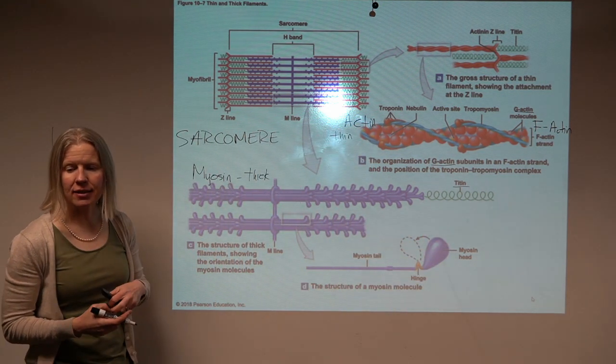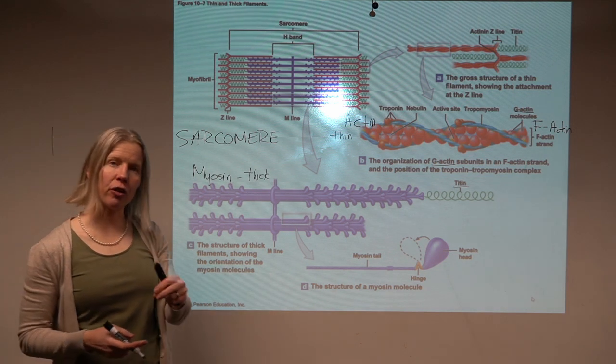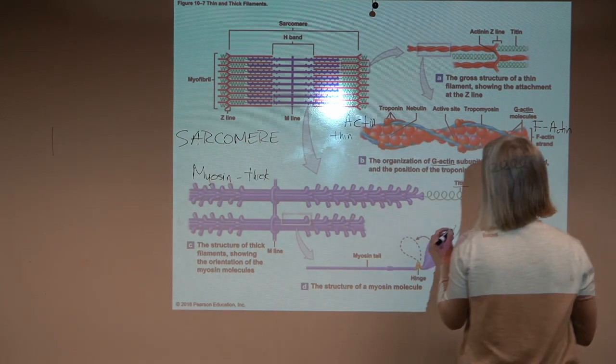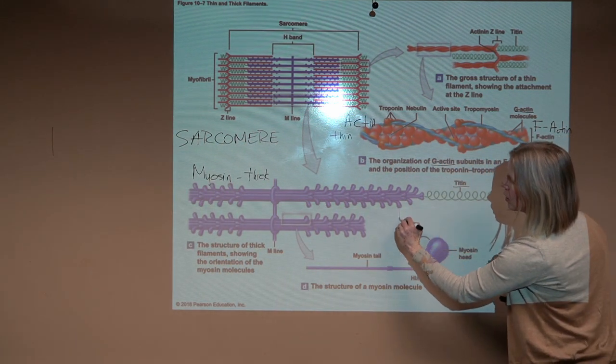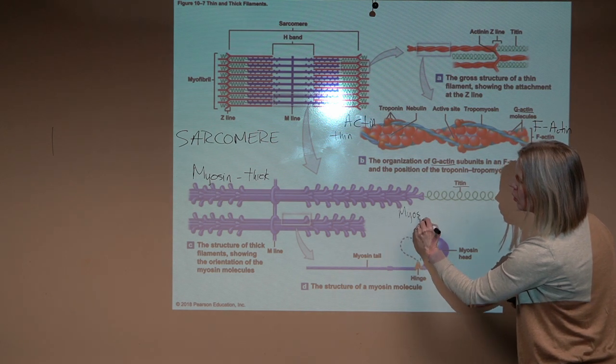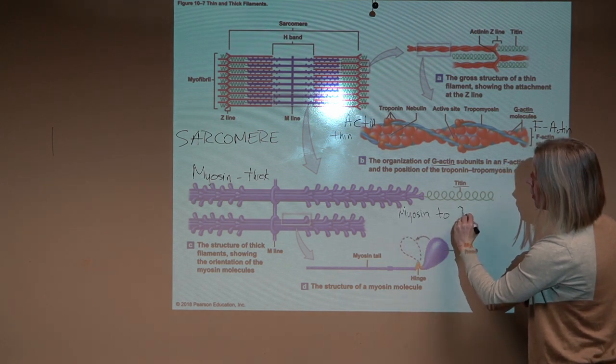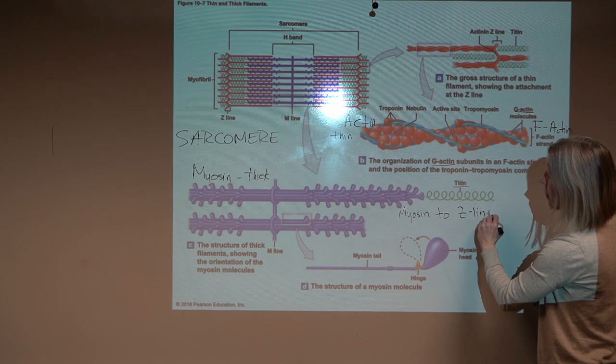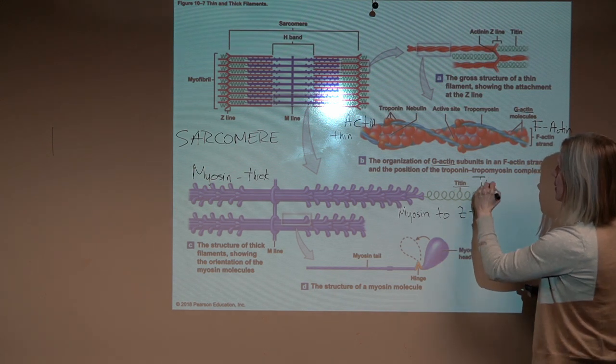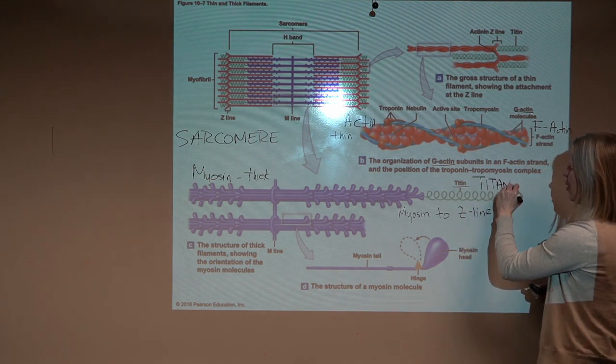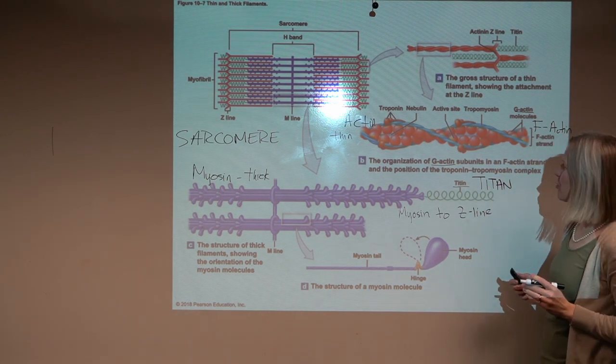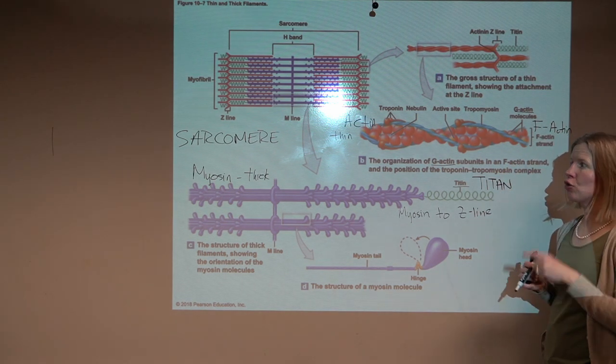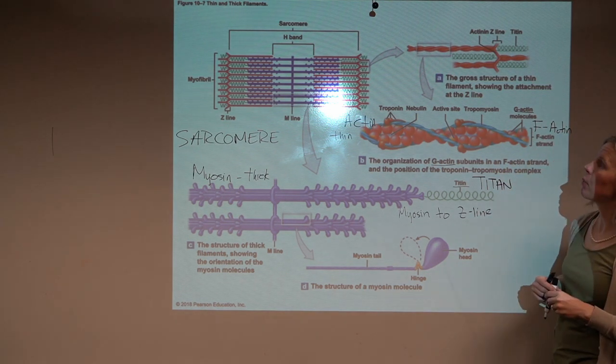So titin is a stabilizing protein that anchors the myosin to that Z-line. And again, titin, which is an awesome name for a protein, so that's kind of a structural or a stabilizing protein.